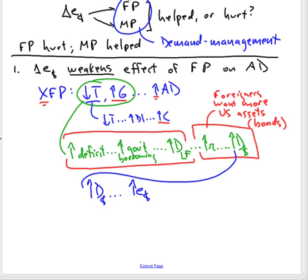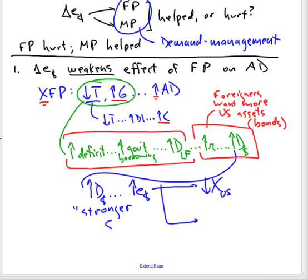An increased exchange value of the dollar will do two things. It will make it more difficult for Americans to export, because if a dollar costs more euros or more yen, then American goods and services are more expensive for Europeans or Japanese consumers to buy. At the same time, the increased exchange value of the dollar — the stronger dollar — will also stimulate imports to the U.S., because a stronger dollar makes foreign goods and services less expensive in dollar terms to American consumers.